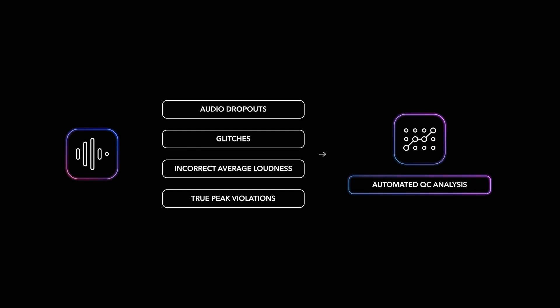The automated QC will be able to pick up audio dropouts, glitches, incorrect average loudness, or true peak violations, but it isn't going to be able to pick up on things which might be misunderstood as creative choice.